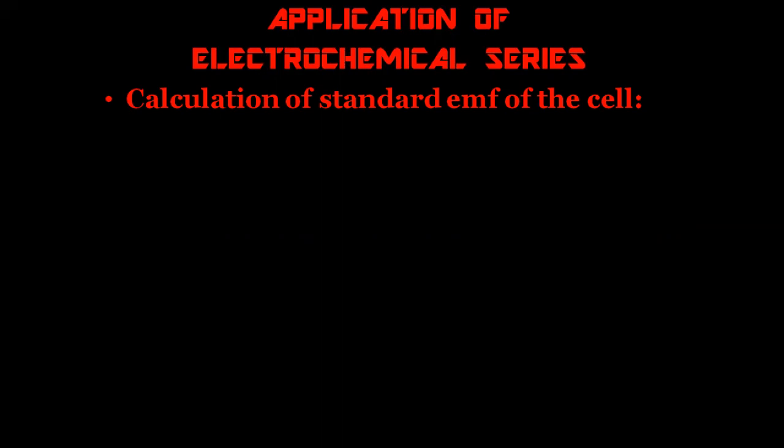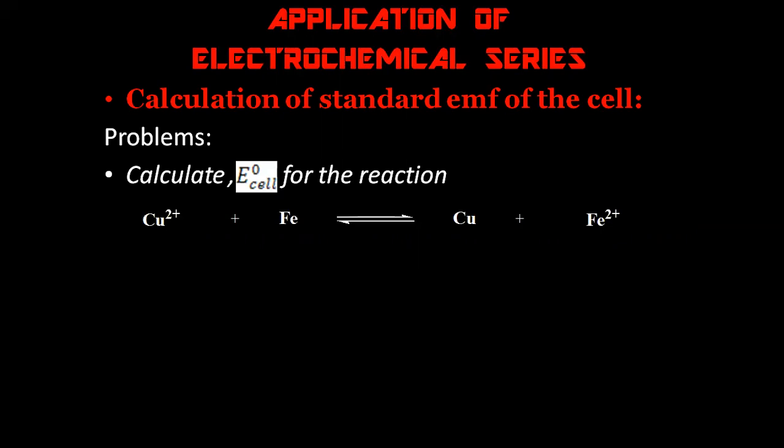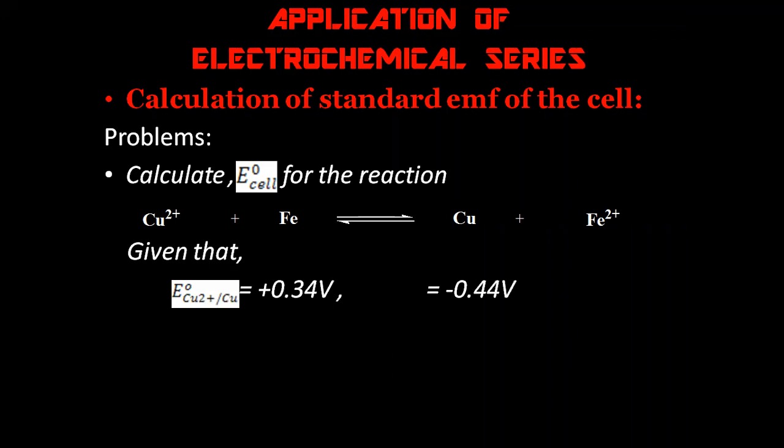Let me take one or two problems to make it clear. Calculate the E° cell for the reaction: Cu²⁺ + Fe → Cu + Fe²⁺. The electrode potential for copper is +0.34 V and for iron it is −0.44 V. Whenever you get such a problem, you must first split the cell reaction into two half reactions. A cell reaction is always half oxidation and half reduction — we call them the oxidation half and reduction half reaction.